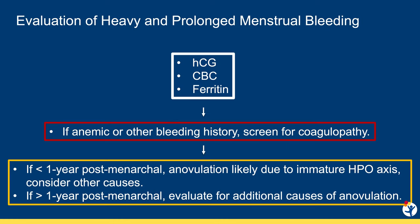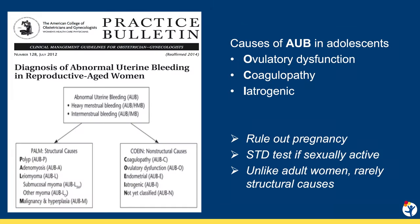In the absence of a bleeding disorder, AUB in teens is likely due to anovulation. After the first menstrual year, causes other than HPO axis immaturity, like PCOS, need to be considered. In addition to anovulation and coagulopathy, many teens have bleeding due to their contraception, a very common side effect of almost all hormonal methods.